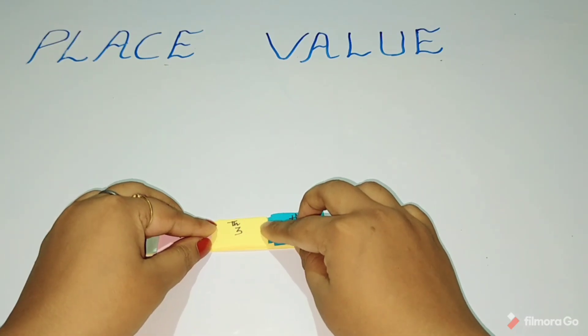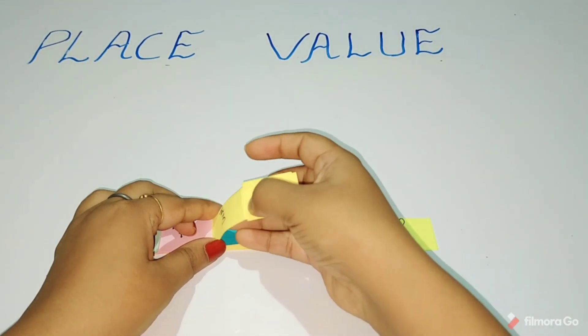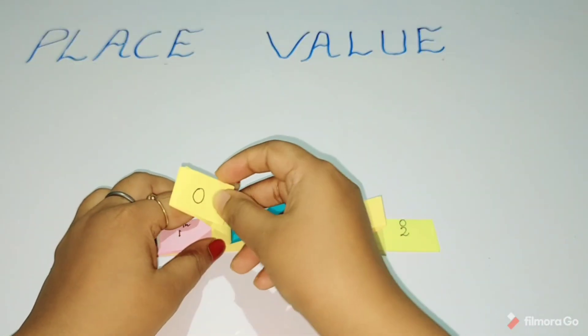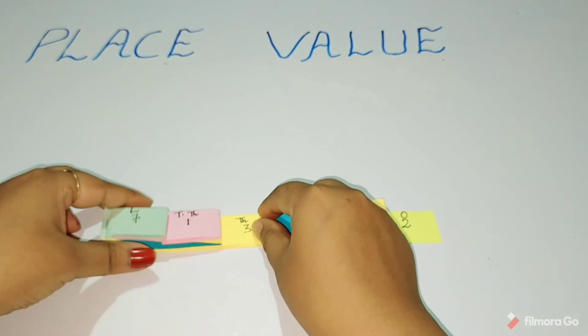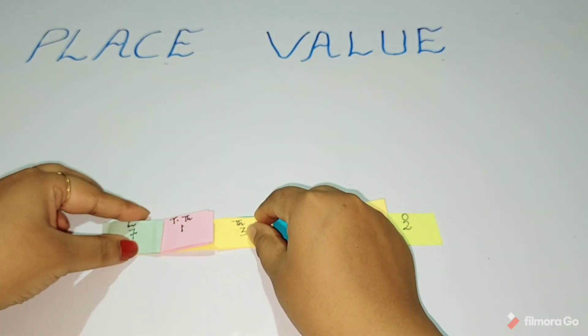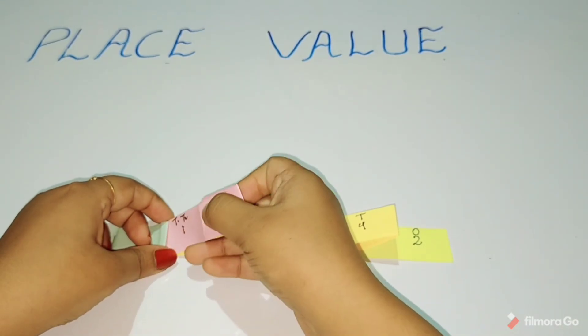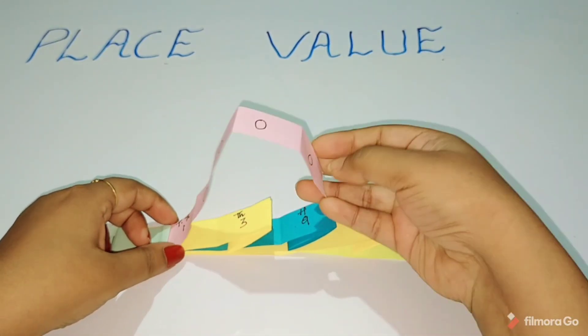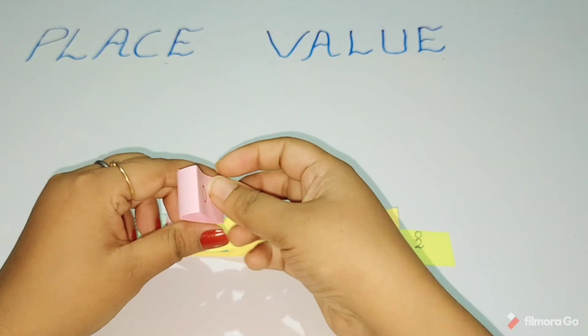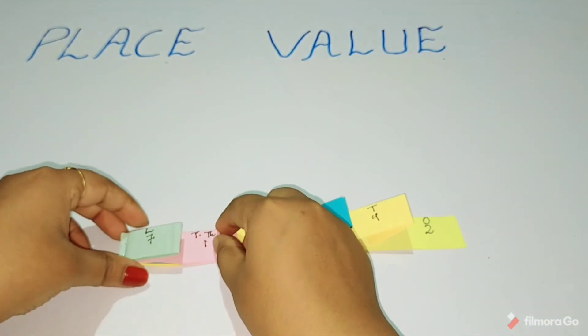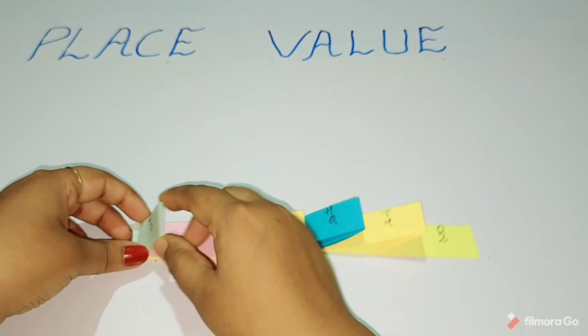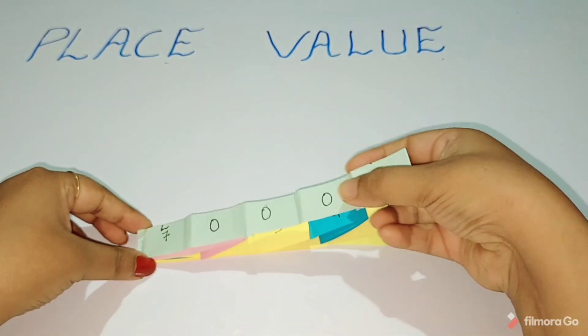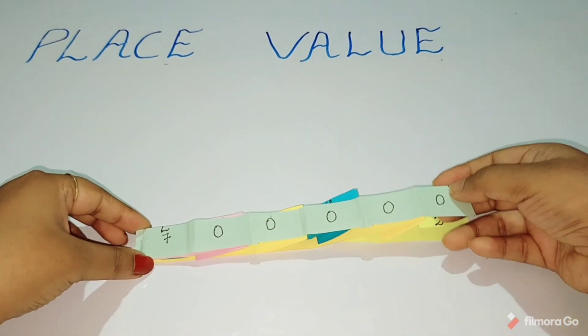Three is at thousands place and its place value is three thousand. One is at ten thousands place and its place value is ten thousand. Seven is at lakhs place and its place value is seven lakhs.